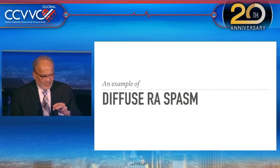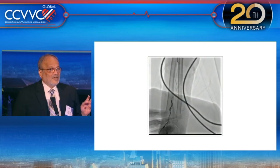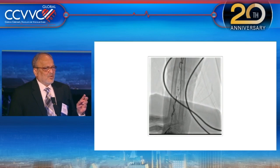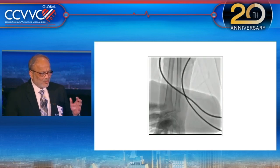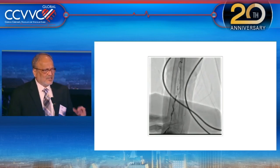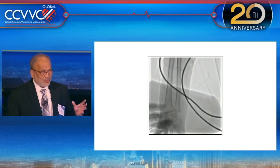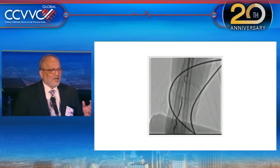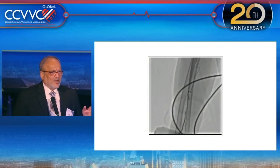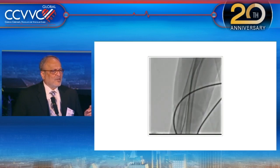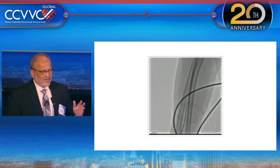Diffuse radial artery spasm mainly happens with younger or very old diabetic females. This type of bad spasm can happen and you have to give the cocktail of your choice — whatever your lab uses as standard of care, maybe nitroglycerin plus diltiazem or nitroglycerin plus verapamil in a couple of doses. You can see some improvement, and then a soft-tip PTCA wire can be negotiated under fluoroscopic guidance. With counter-clockwise rotation the catheter can be maneuvered across, and usually if the spasm breaks you don't get any resistance throughout.